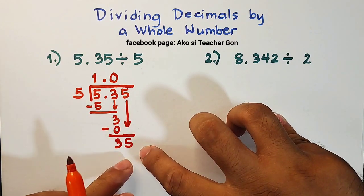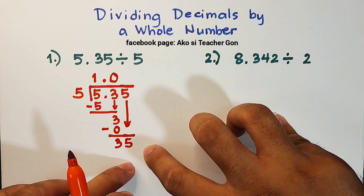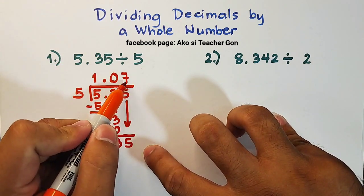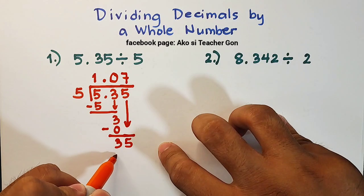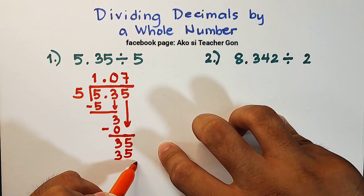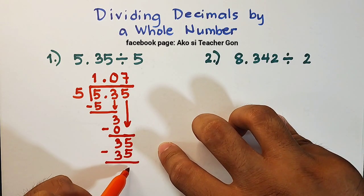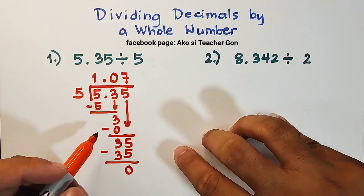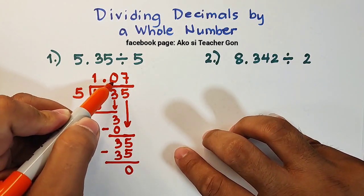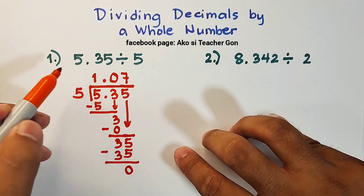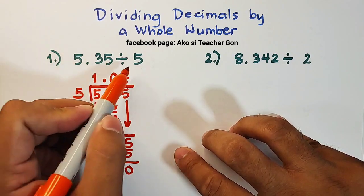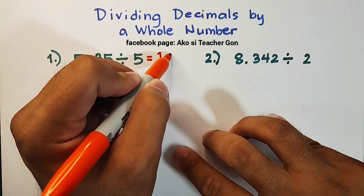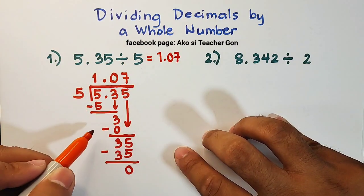So as you can see, we have now 35. And 35 divided by 5 is equal to 7. 7 times 5 is equal to 35. So we will subtract this, and automatically, your remainder is 0. Meaning, the quotient is 1.07. Or in other words, 5.35 divided by 5 is equal to 1.07.